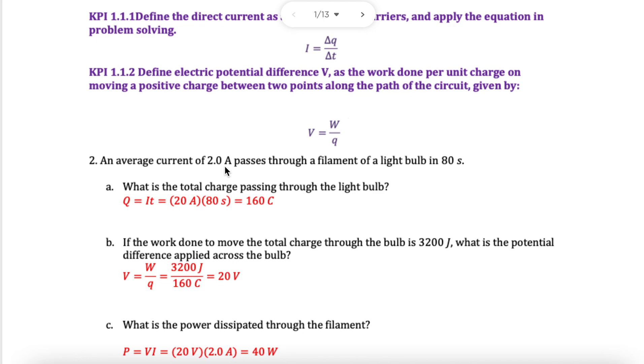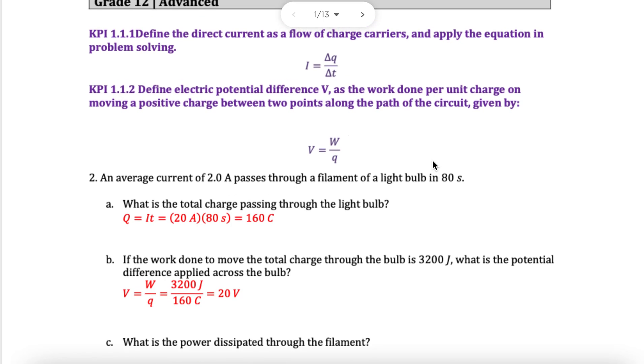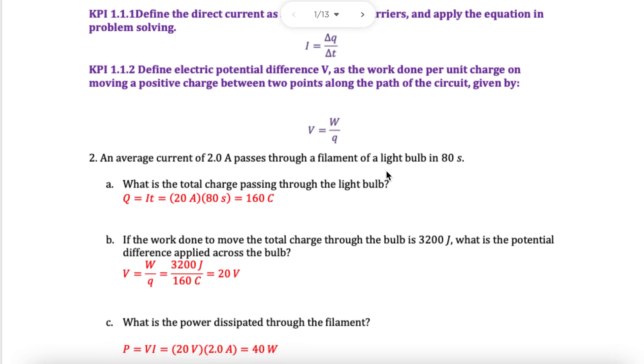In this question, we have to find the current passing through a filament of a bulb in this much seconds and need the charge. So obviously the answer is here in the answer key, but if you're seeing this in an exam, you see a current, which I know the letter for that is I, and I know seconds, so that's a time, and I need charge, which is Q. Q, I, and T.